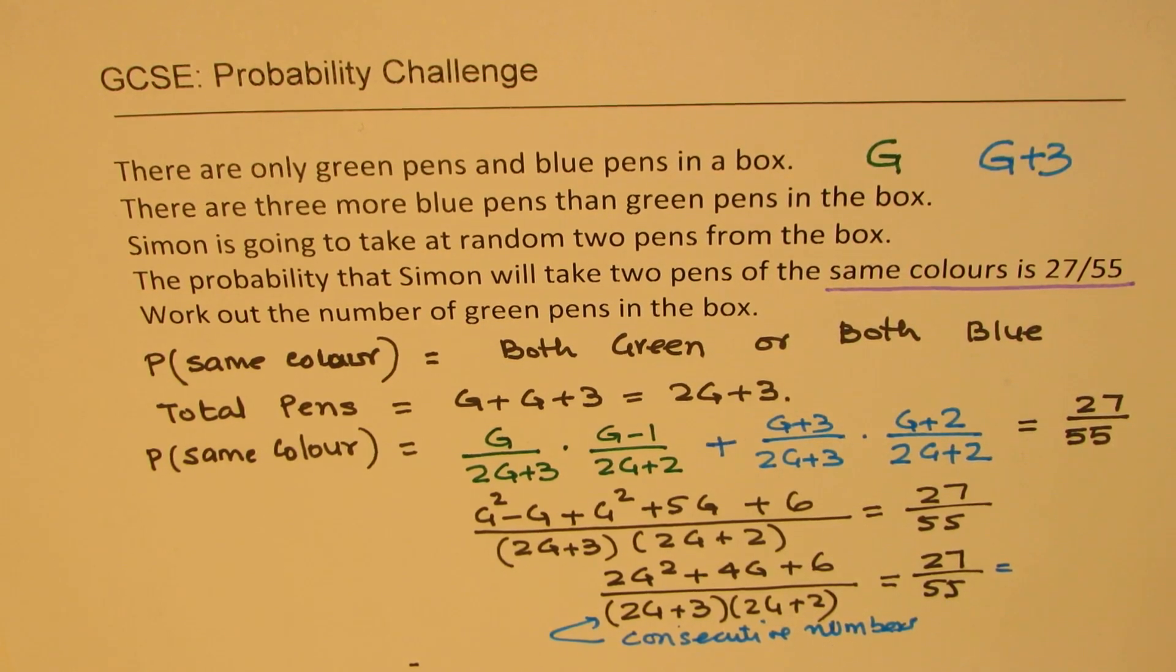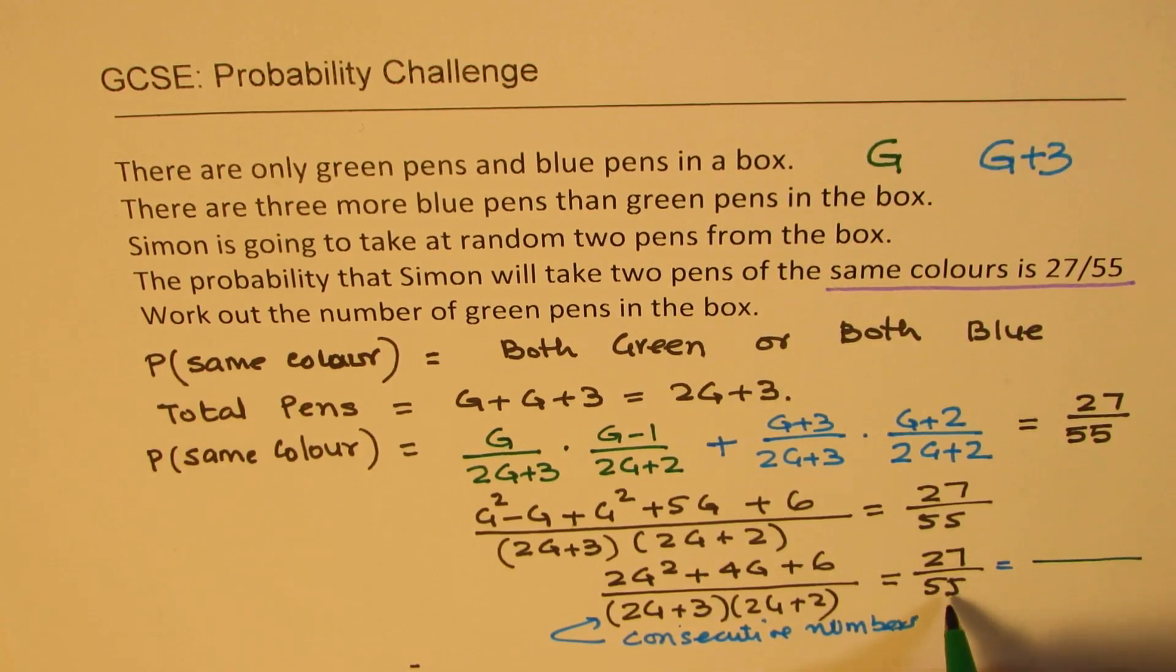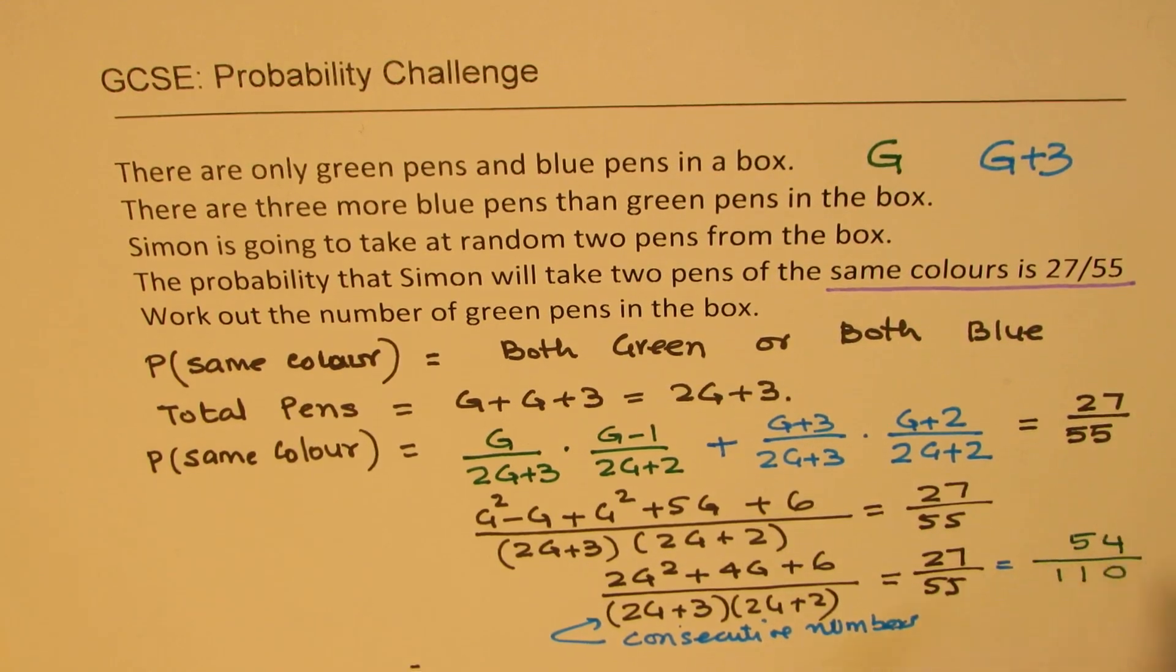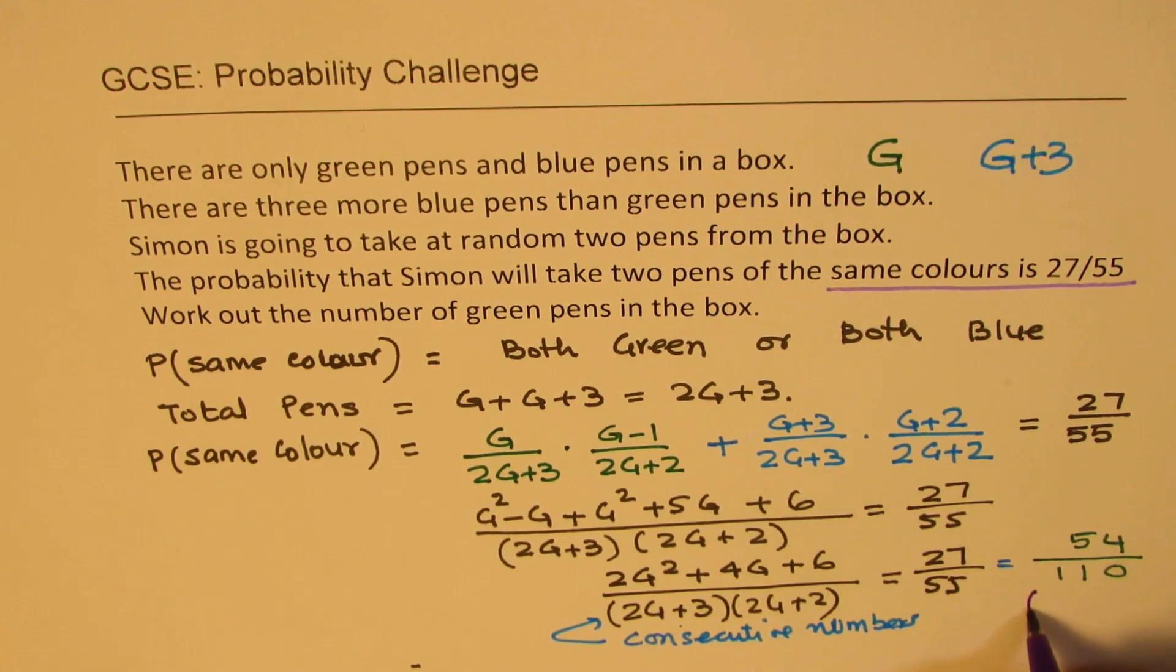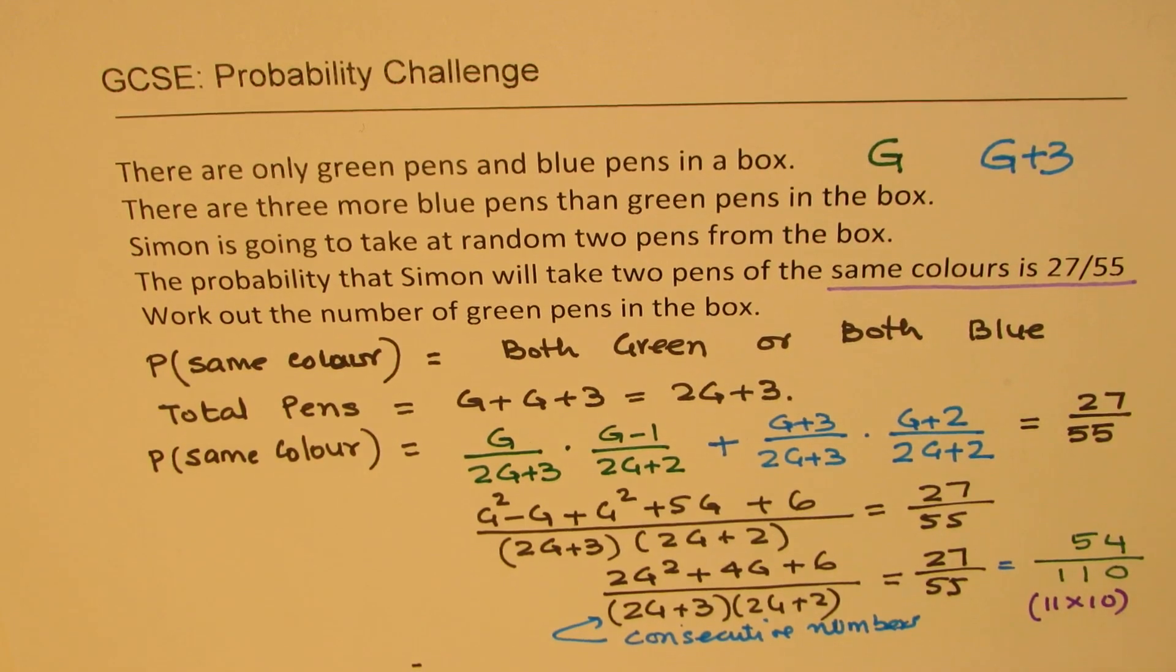55, you cannot get as a product by two consecutive numbers. But if I multiply both by 2, then 2 times 5 is 10, we get 110 here. And multiplying 27 by 2, I get 54. I could write 110 as 11 times 10.